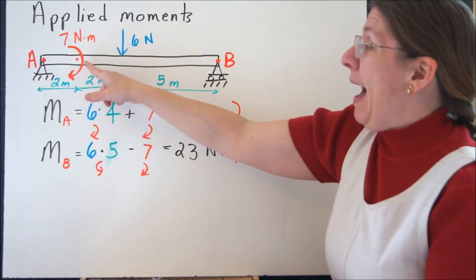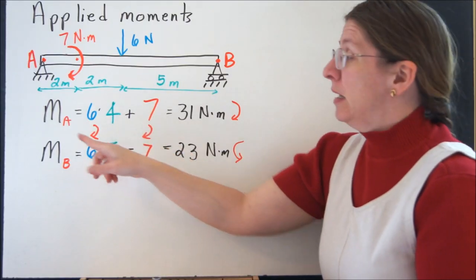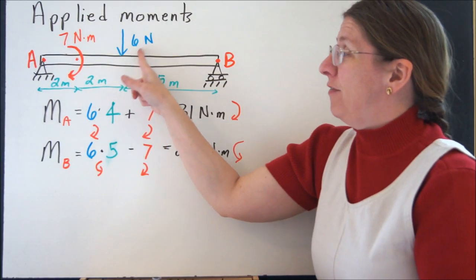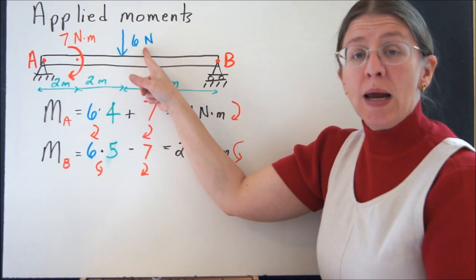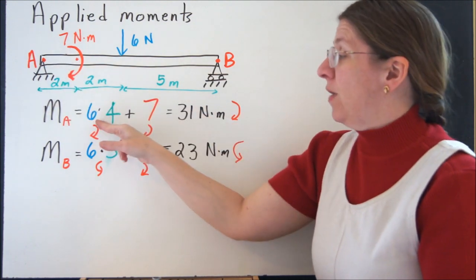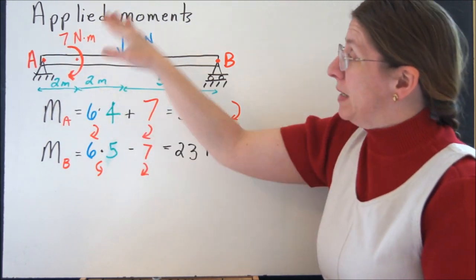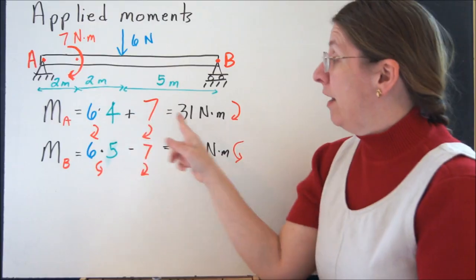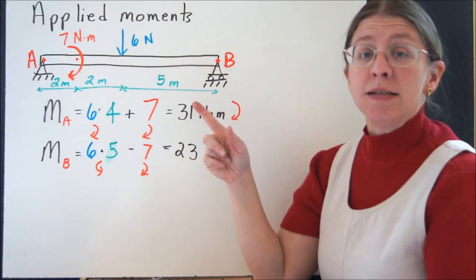Now when you add up your force and your moments, so if I take the moment at A, I have this force. This force creates a tendency to turn at point A because it acts at a distance. So I have 6 times 4. That will be tending to turn clockwise.